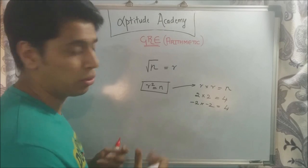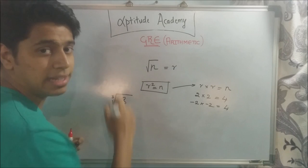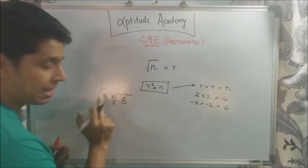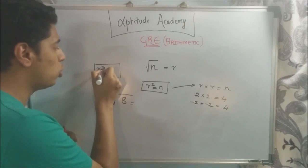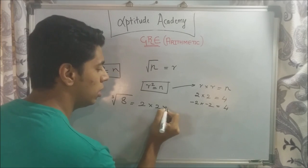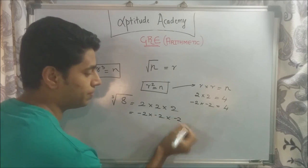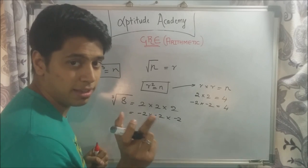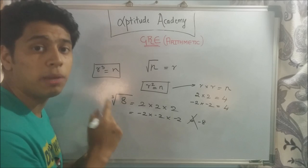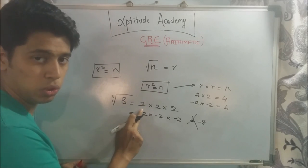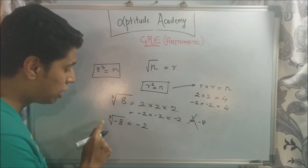Similarly, you also have cube roots, denoted by the same sign but with a 3 written — for example, cube root of 8. If there's no number written, it's assumed to be 2 and it is a square root. The cube root basically means finding a number which when multiplied thrice gives you 8, so r cubed equals 8. The number that satisfies this is 2: 2 into 2 into 2 equals 8. Here you cannot have minus 2, because minus 2 into minus 2 into minus 2 gives minus 8, not plus 8. But the cube root of minus 8 is minus 2, since minus 2 into minus 2 into minus 2 gives minus 8.